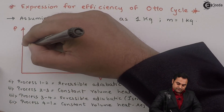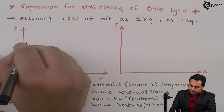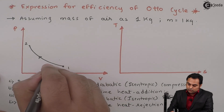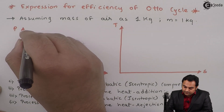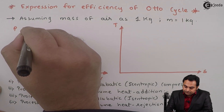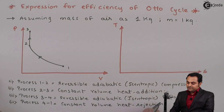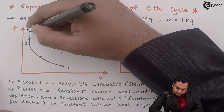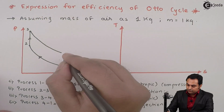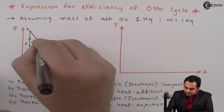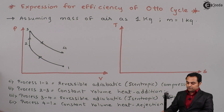These are the four processes in Otto cycle. Now I'll represent them on the PV and TS diagram. Process 1 to 2 is isentropic compression, shown by a curve on the PV diagram. Next, process 2 to 3 is constant volume heat addition — keeping the volume constant from 2 to 3. Next, process 3 to 4 is reversible adiabatic, that is isentropic expansion. Process 4 to 1 is constant volume heat rejection.